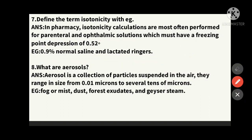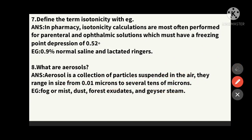The eighth question: what are aerosols? An aerosol is a collection of particles suspended in air. They range from 0.01 microns to several tens of microns in size. Examples of aerosols include fog, perfumes, geyser steam, and forest exudates — these are the basic examples of aerosols.